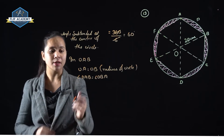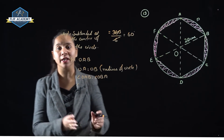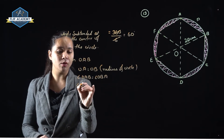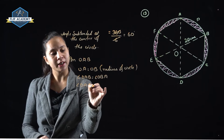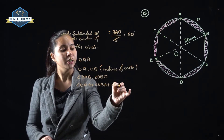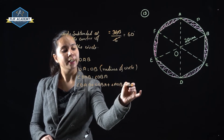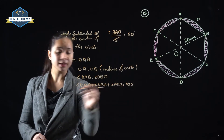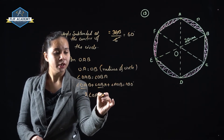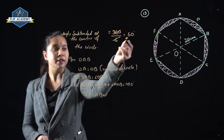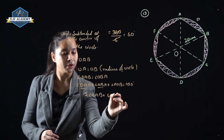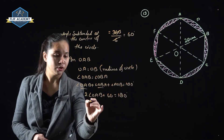Now, by the triangle angle sum property — the sum of angles in a triangle is equal to 180°. So, angle OAB + angle OBA + angle AOB = 180°. Since angle OAB = angle OBA, we write 2 × angle OAB + angle AOB = 180°. The value of angle AOB is 60°, because all parts were making 60°.